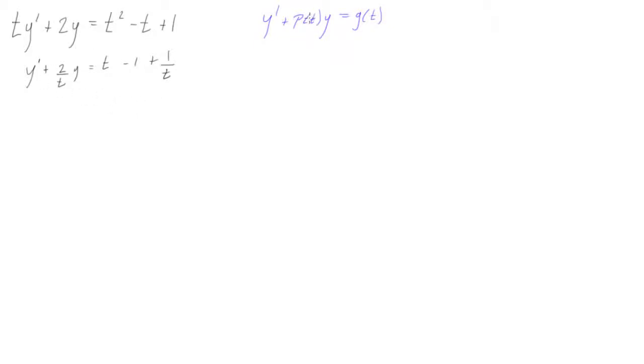So now we have it in the proper form and we want to find out what p(t) is. We can go back to blue, I guess. So we have, right here we have our p(t), right? It's whatever is multiplied by y. So we can just write that down. p(t) is equal to 2 over t.